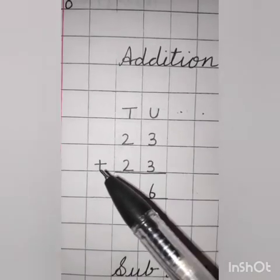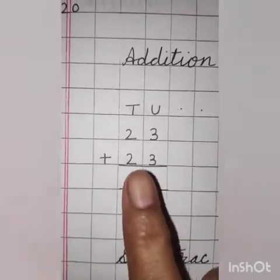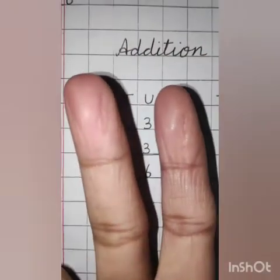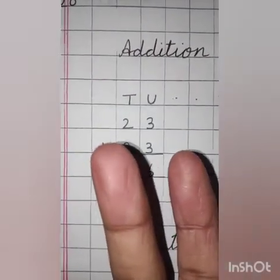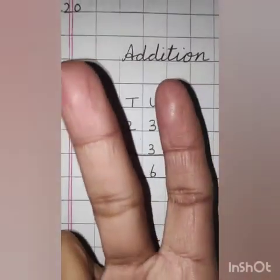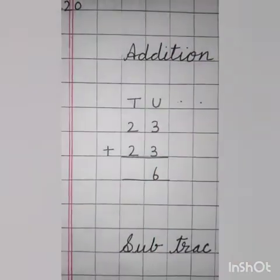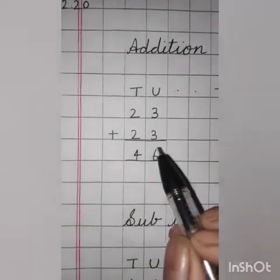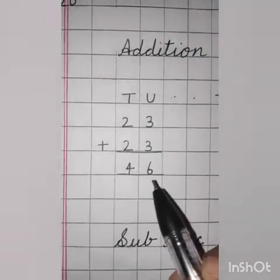Ten. Two plus two. Two goes on head and two on fingers. What comes after two? Three, four. So, answer is four. Four, six, forty-six.